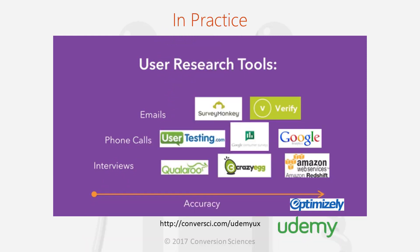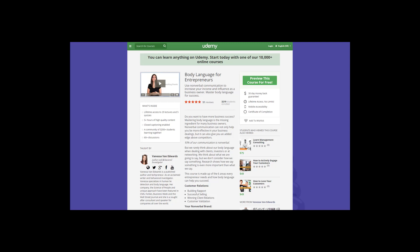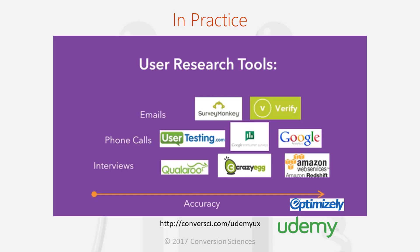They used Crazy Egg heat maps on the existing site, a tool called Verify — now called Helio — which is very similar to Usability Hub and has the same tests: the preference test, the five-second test, the question test. And they used Google Analytics. Finally, they launched and used Optimizely to do an A-B test to verify that the new page was outperforming the old page.